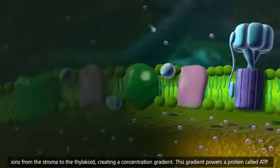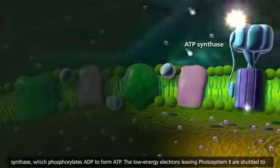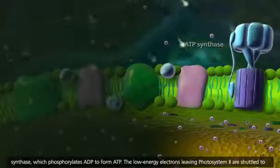This gradient powers a protein called ATP synthase, which phosphorylates ADP to form ATP.